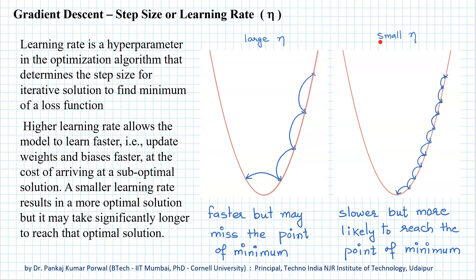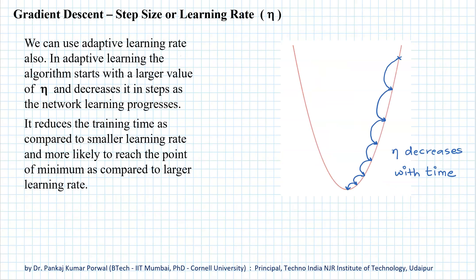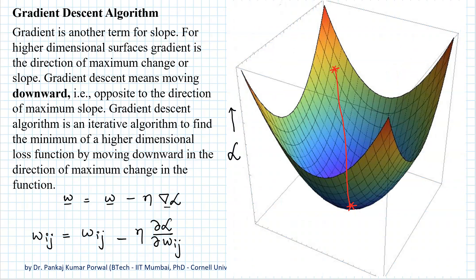We can use an adaptive learning rate — starting with a larger learning rate and decreasing it as we move towards the minimum. This way we reach the minimum faster than with a constant small learning rate, while the likelihood of actually reaching the minimum is higher than with a constant large learning rate.